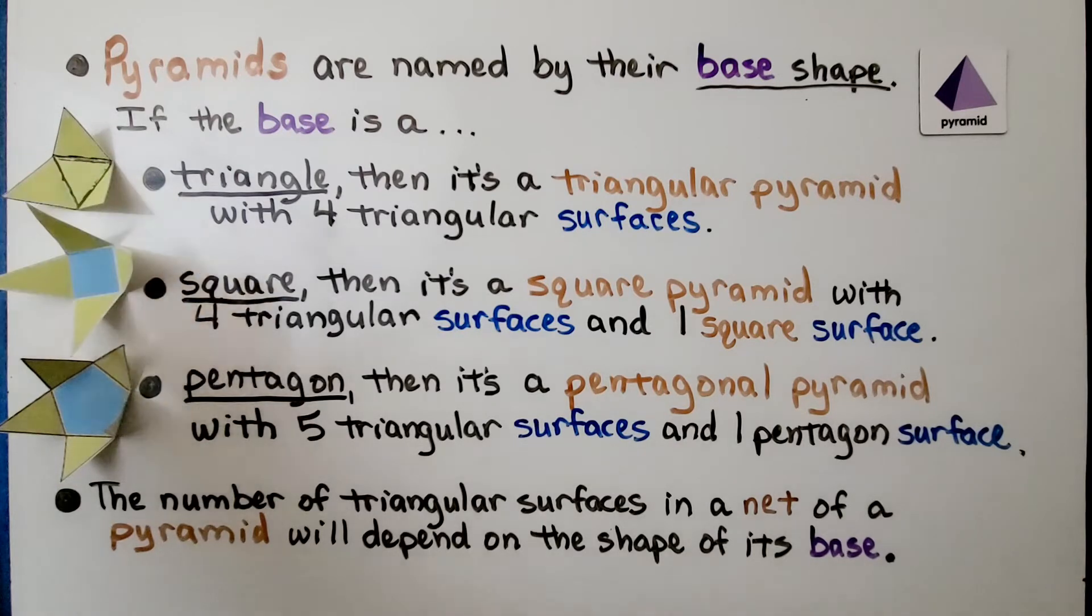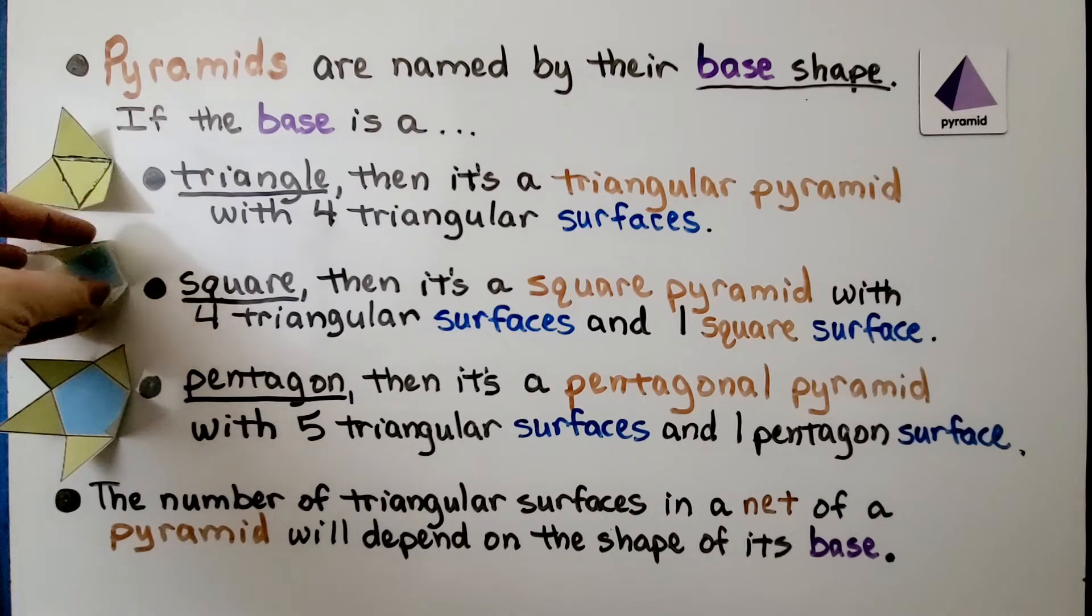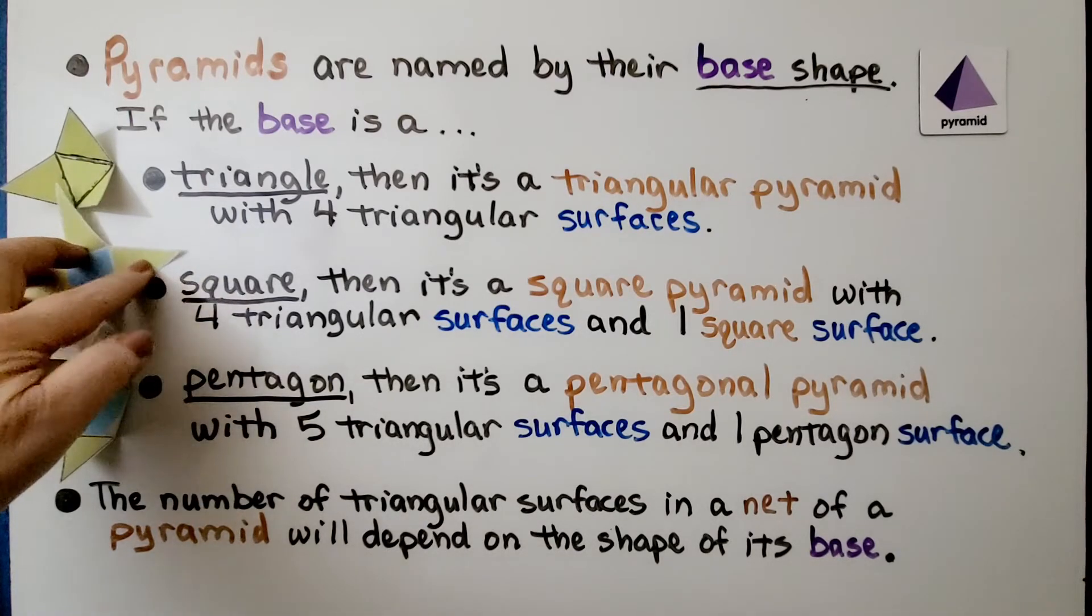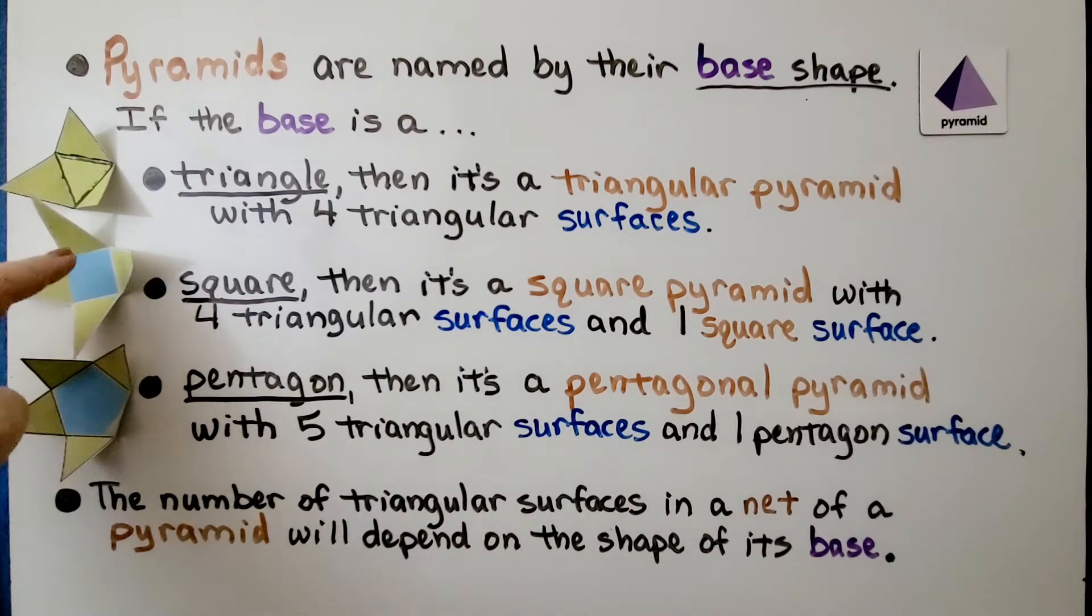One, two, three, four. If the base is a square, then it's a square pyramid with four triangular faces and one square surface as the base.